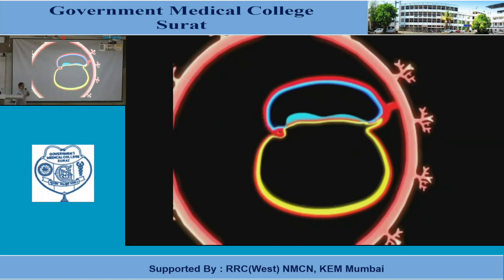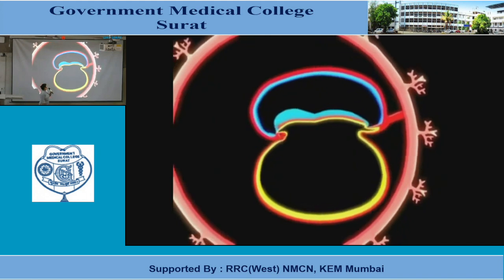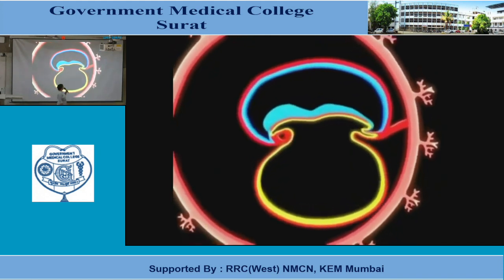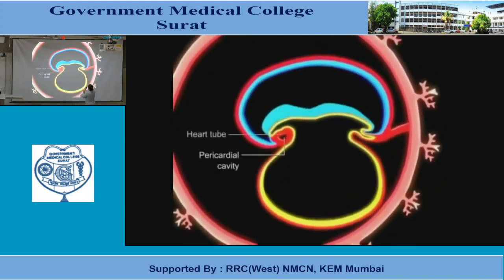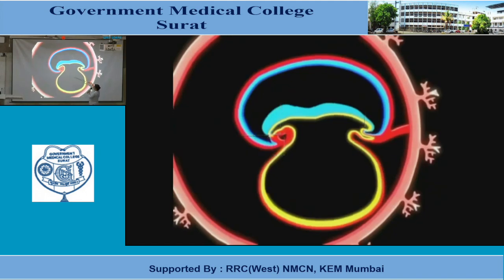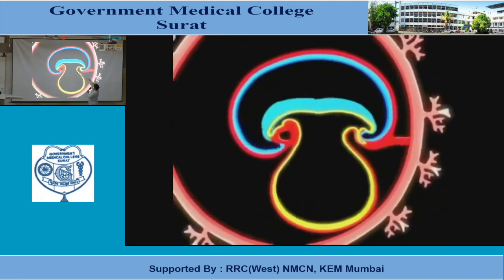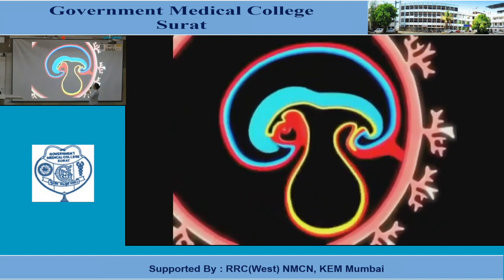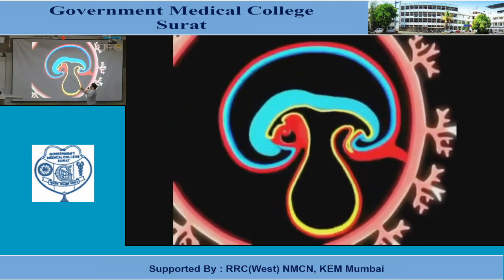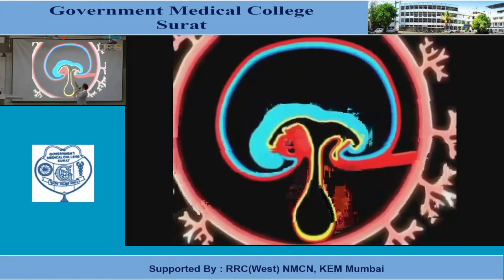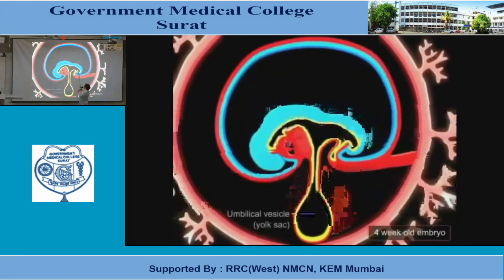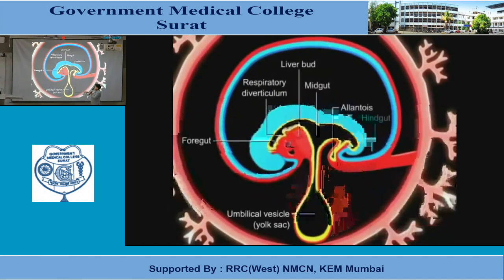You can see how the folding occurs — this is the lateral anteroposterior folding. The folding has occurred. The yolk sac is gradually absorbed. This is the foregut, this is the midgut, and this is the hindgut. This is the vitelline intestinal duct. You can see foregut, midgut, and hindgut.